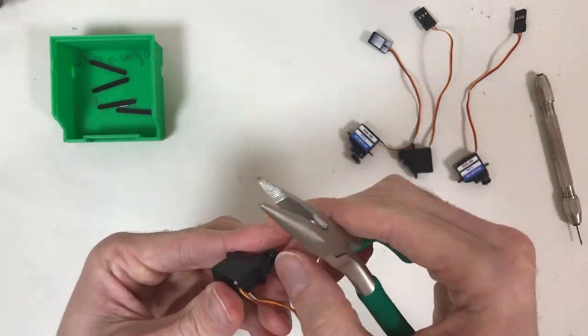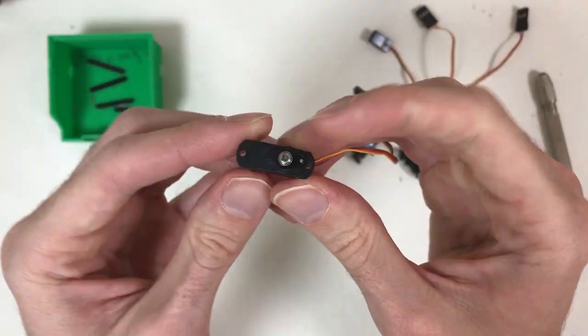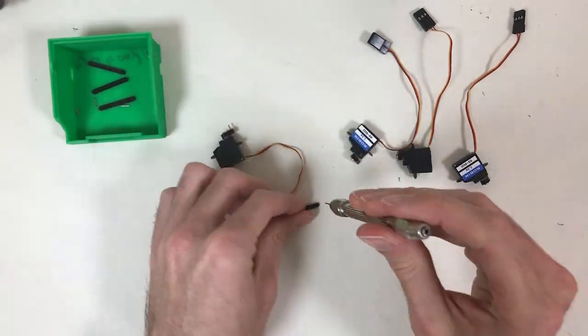Each servo motor has a small 3D printed arm attached to the shaft. At the end of the shaft, I insert a pin. Then, I attach to this pin a linkage that will later connect to the grid fin.